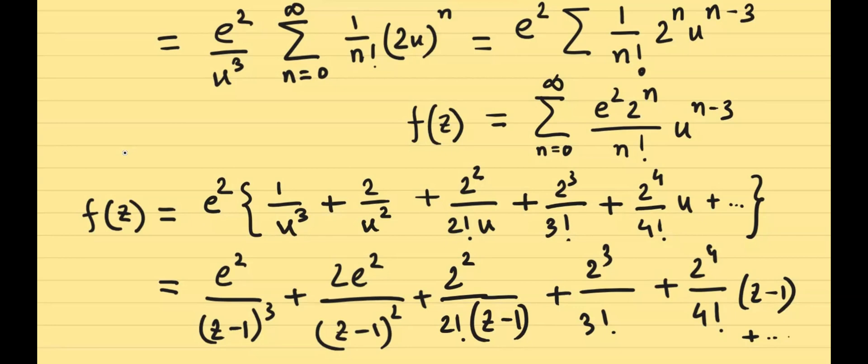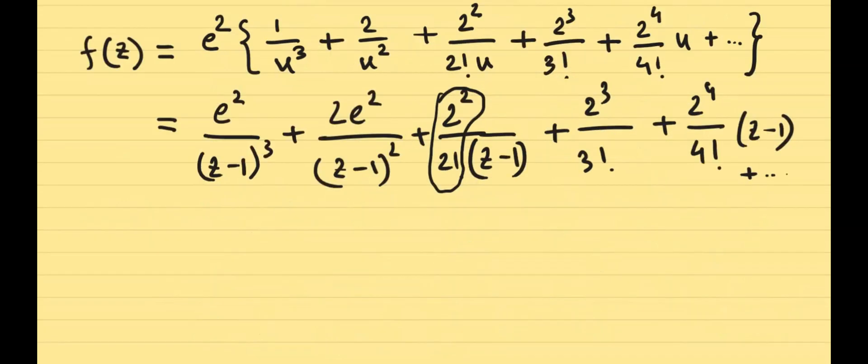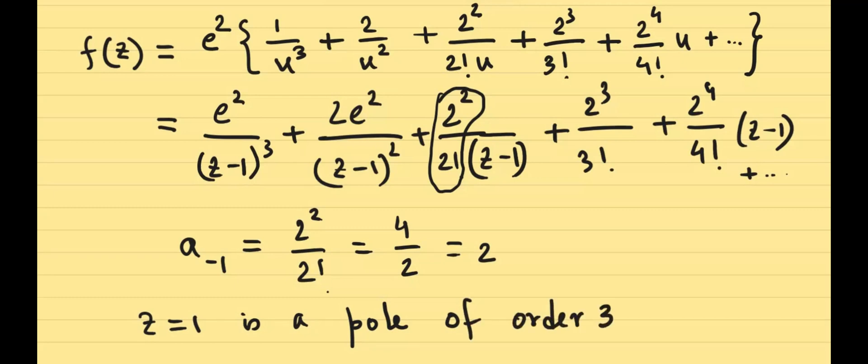Like before, we have the residue here, which is 2 squared divided by 2 factorial. So the residue a minus 1 is going to be 2 squared divided by 2 factorial, we have 4 divided by 2, which is 2. The order of the pole, so there is a pole because it's a singularity, and the order is negative 3, so it's a pole of order 3. It's also called a triple pole.